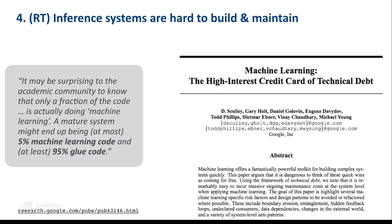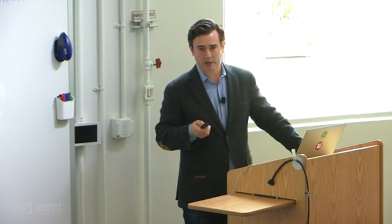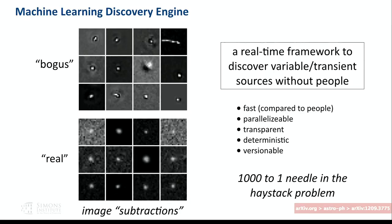Now let me touch on discovery: I've got something in my database — is this interesting, is it real, and what should I do next? You've already seen real-bogus mentioned in the previous talk. You see bad subtractions on top as we try to find new objects, and good subtractions on the bottom — it's a bit like Anna Karenina: all the bogus detections are all different from each other, and all the real ones are similar to each other. State-of-the-art puts us at about 1,000 to 1, or maybe a few hundred to 1, for this needle in the haystack — for every real object, there are hundreds of bogus detections.